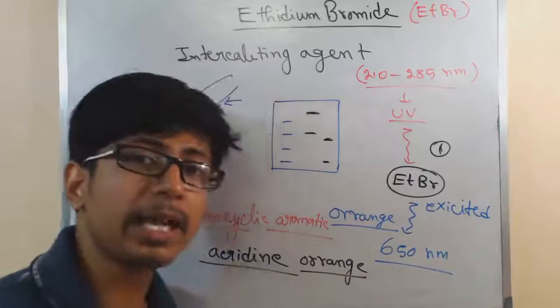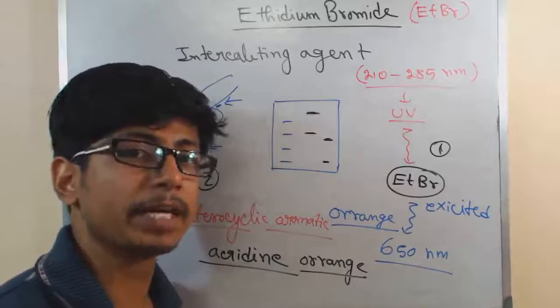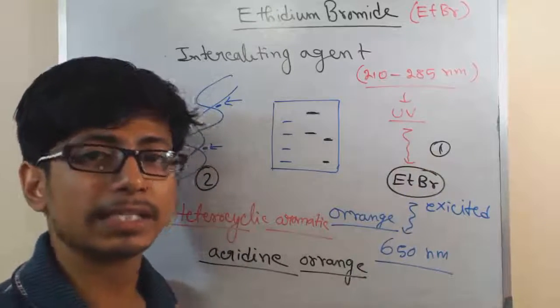The interesting idea about this ETBR, upon binding to the DNA, it becomes 10 times more intense in coloration of orange after we add it to the UV light. That is another very good thing. It is 10 times more bright and 10 times more effective after it is added to the DNA to visualize the DNA.